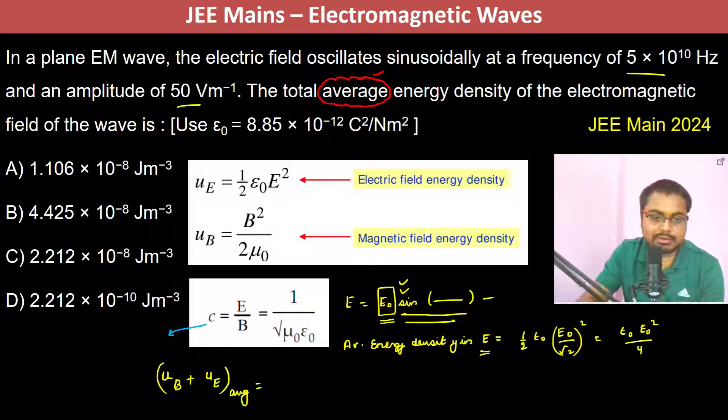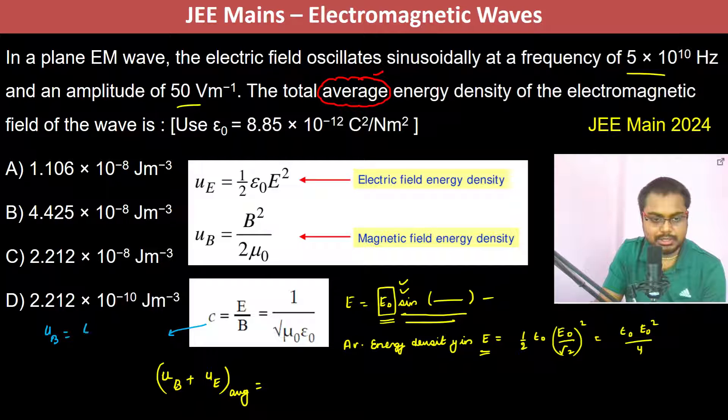And since C equals E by B, which is mentioned here, we can find out UB equals B square by 2 mu naught. So what is B? It's E square mu naught epsilon naught by 2 mu naught. If you see, it is half epsilon naught E square, which is the same.